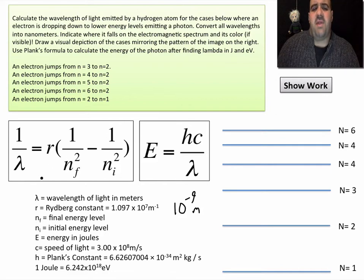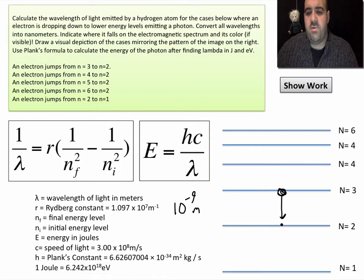The main thing is calculating the wavelength. We're going to draw a visual depiction of the cases, mirroring the pattern of the image on the right. What I simply want is for case one, an electron is jumping from three to two. You draw an electron, three to two. It's emitting light. If this is red light, make that red or write red. If it's UV, write UV. We're going to model that for each case when we're done.